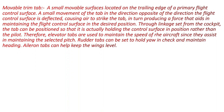A movable trim tab is a small movable surface located on the trailing edge of the primary flight control surface. A small movement of the tab in the direction opposite to the deflection of the flight control surface causes air to strike the tab, in turn producing a force that aids in maintaining the flight control surface in the desired position. Through linkage set from the cockpit, the tab can be positioned so that it is actually holding the control surface in position rather than the pilot.